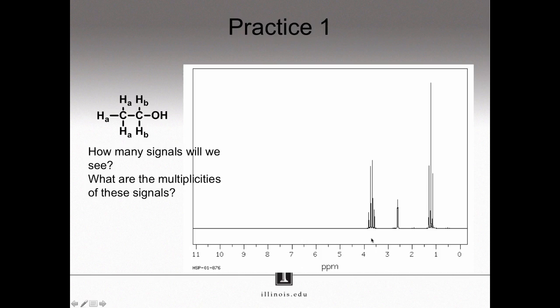Do the chemical shifts make sense? Should the quartet be further downfield than the triplet? Remember, the quartet belongs to the HB protons. The HB protons are very close to this electron withdrawing alcohol. Therefore, the HB protons should be more deshielded than the farther away HA protons. Therefore, the HB protons should be more downfield, and that matches what we see.